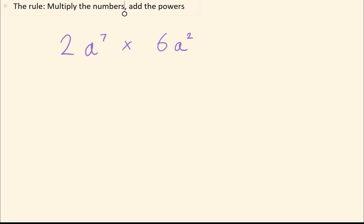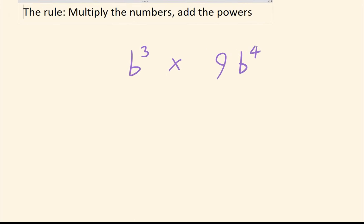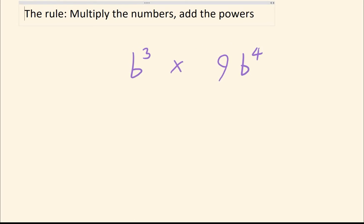And for the most part, that is all you would need to do in these questions. Keep in mind, if there's only one number, that's absolutely fine. So here, you would just have 9, and then add these two powers, b to the 7.